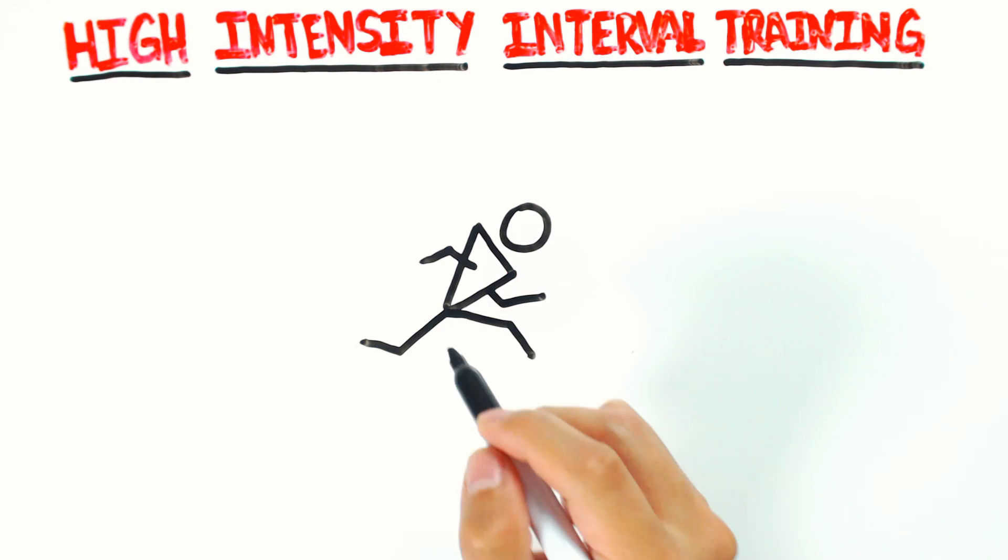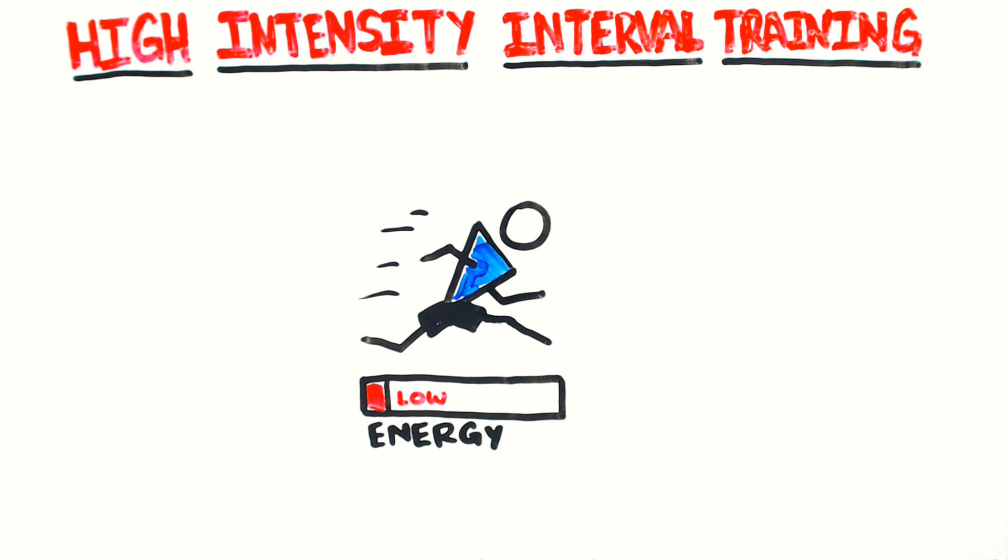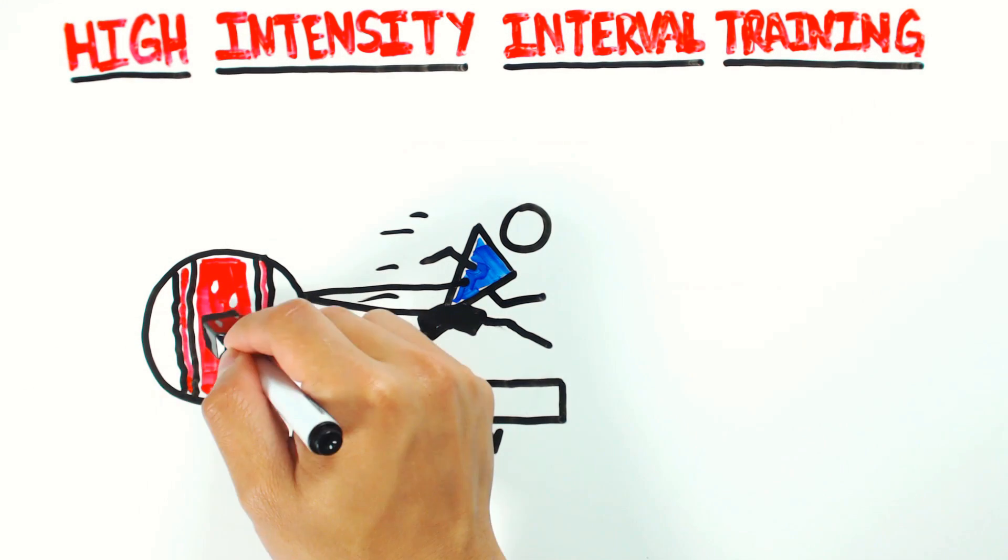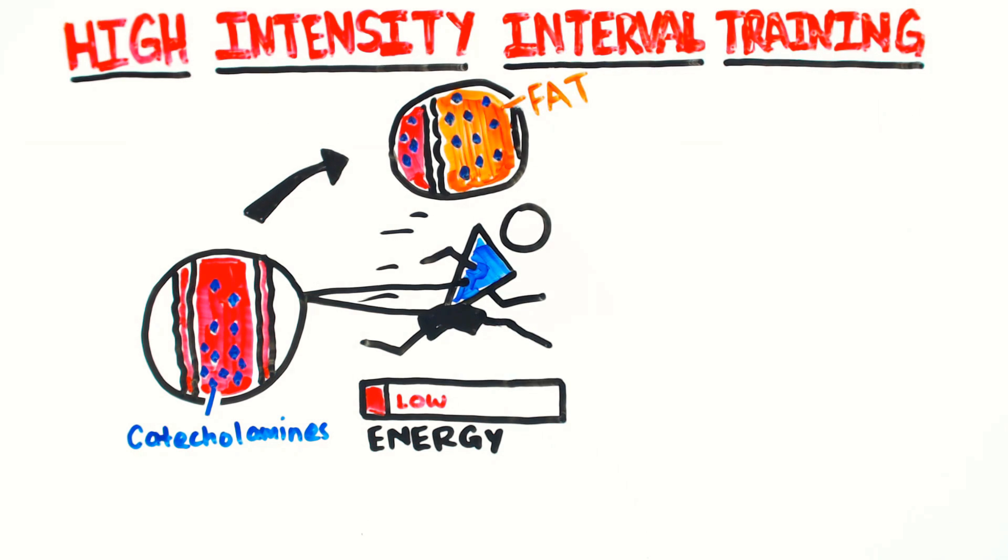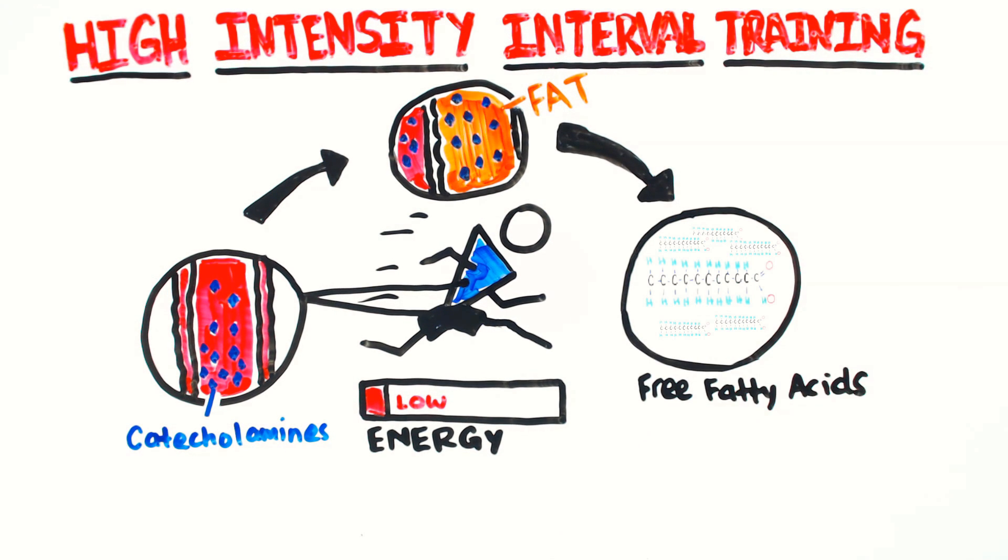When the body goes through intense activity, it needs to be able to keep up with the energy demand. One way of doing this is by secreting high levels of fat-releasing hormones, known as catecholamines, into the bloodstream. The more catecholamines, the more quickly fat is broken down into free fatty acids.